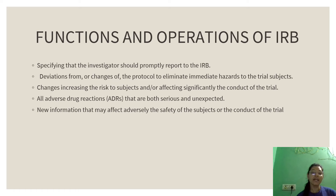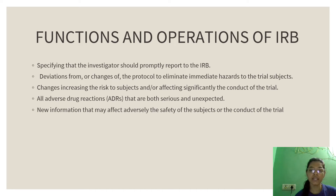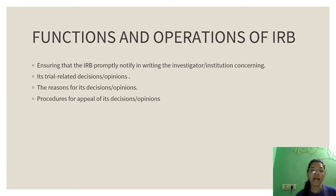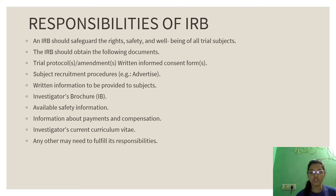Other functions include specifying that investigators should promptly report to the IRB: deviations from or changes to the protocol to eliminate immediate hazard to the subject; changes increasing the risk to subjects or significantly affecting the conduct of the trial; all adverse reactions that are both serious and unexpected; and new information that may adversely affect the safety of subjects or the conduct of the trial. The IRB should promptly notify in writing the investigator or institution concerning its trial-related decisions or opinions, the reasons for its decisions, and the procedure for appeal.